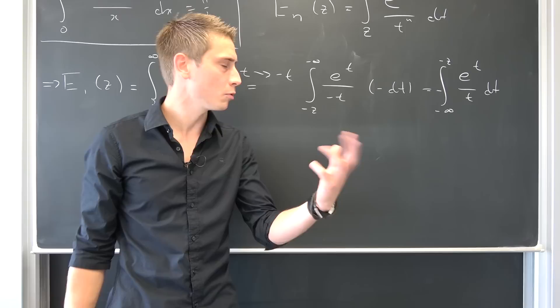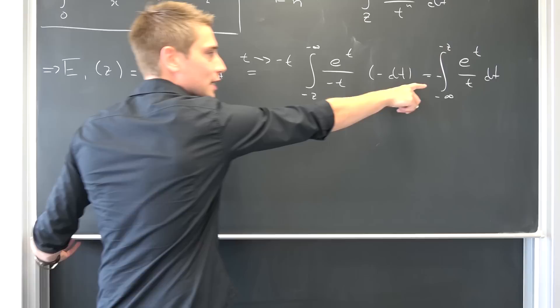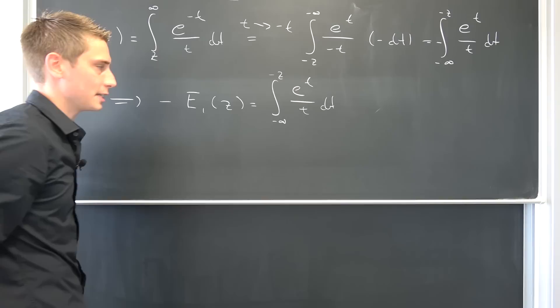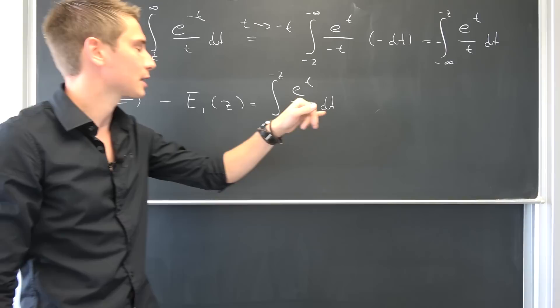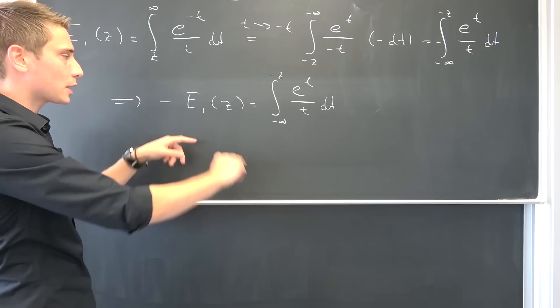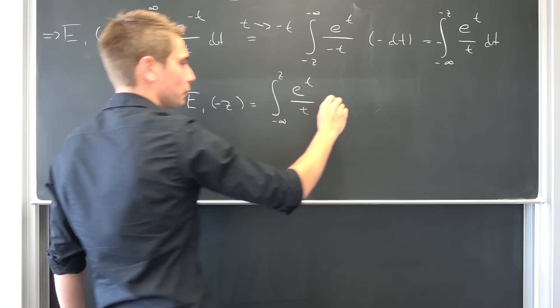Why are we doing this? One more transformation and then we are at our exponential integral. First I would like to note: if we multiply both sides by negative one, we have that negative E₁(z) is nothing but the integral from negative infinity to negative z of e to t over t dt. Now, if we have convergence as a given, so if our upper bound is okay, then this thing converges absolutely and uniformly. Then we can actually take the limit as z approaches negative z. So if we let the limit approach negative z, we end up with this integral, which we are going to call Ei(z) — the exponential integral.